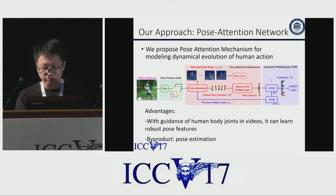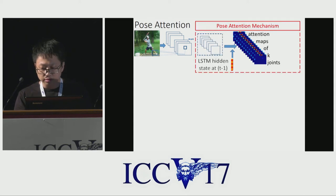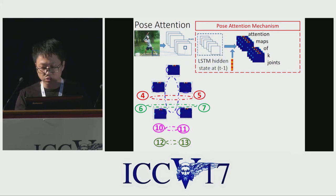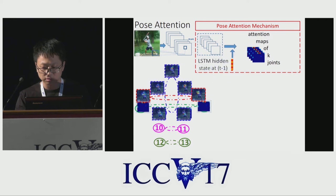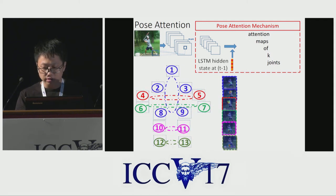Next I will describe the key part, pose attention, in more detail. First, the current video frame is fed into a CNN to generate a convolutional feature cube. Then our pose attention mechanism is used to generate attention heat maps for different human joints. Each human joint saliency map tells the convolutional cube which joint location to focus on. Since human parts contain more robust information than individual joints, we group semantically related joint features into several body part features, which are then fused to get the pose feature.